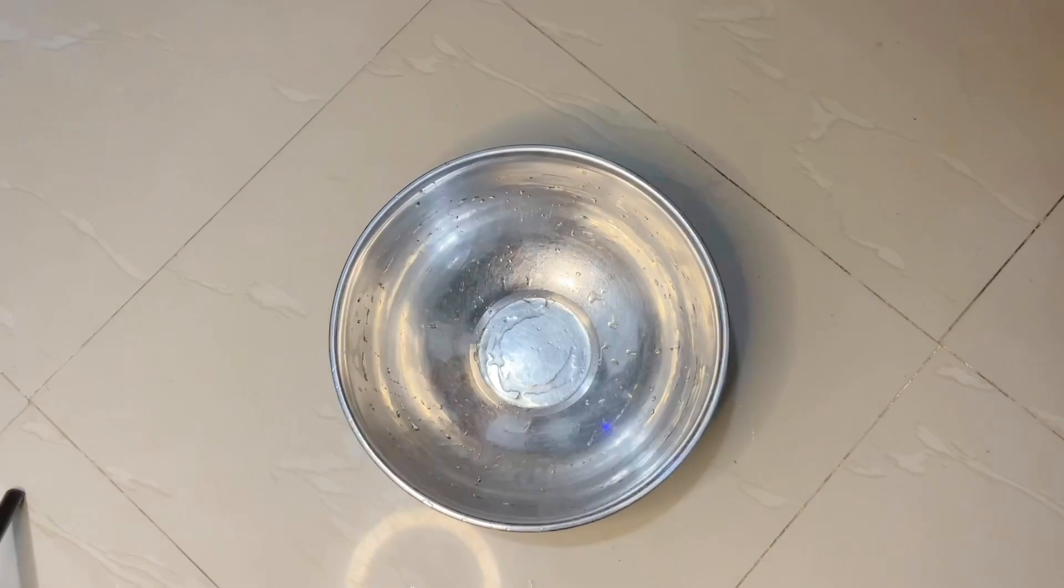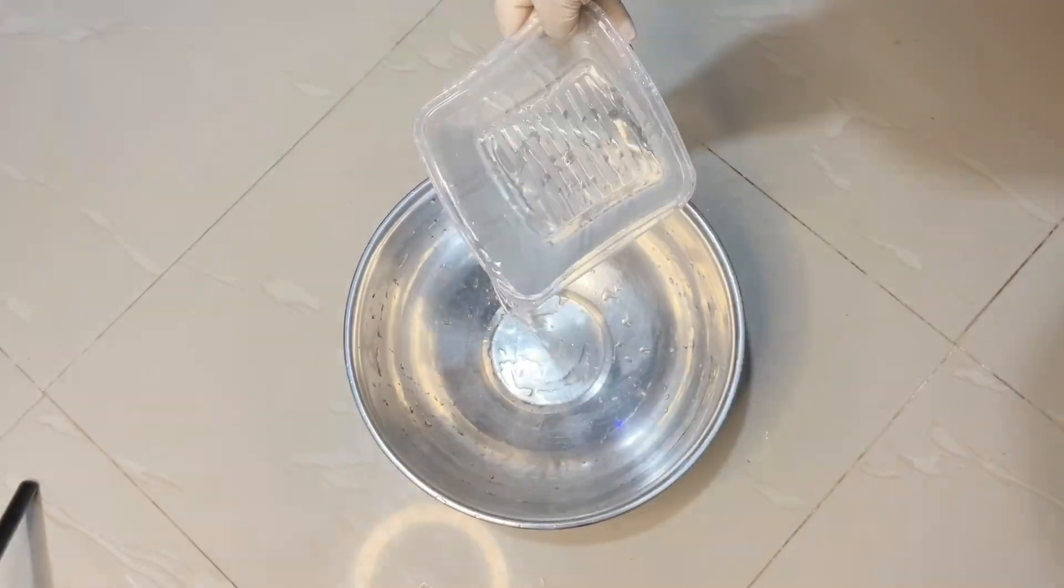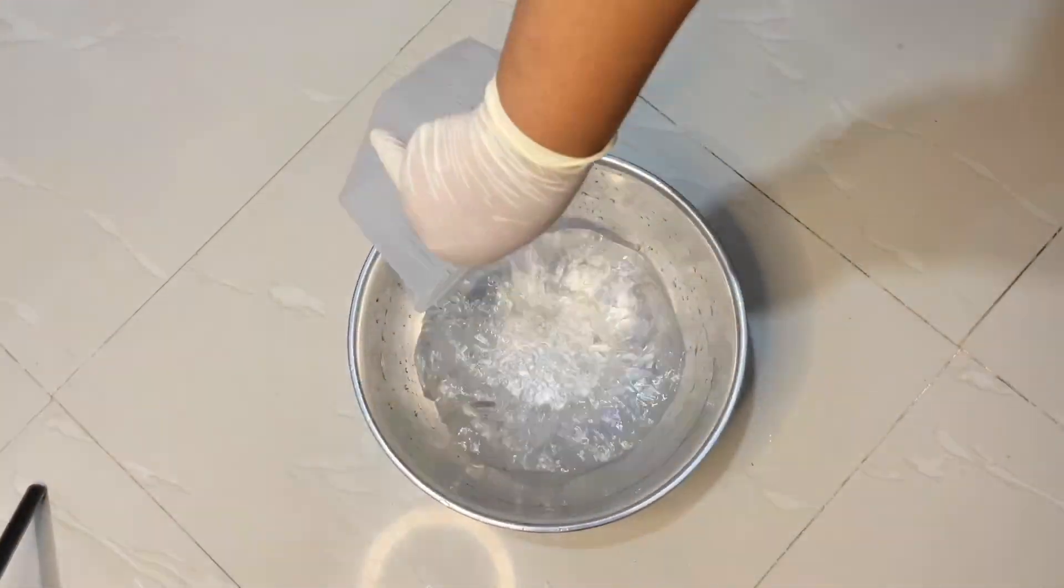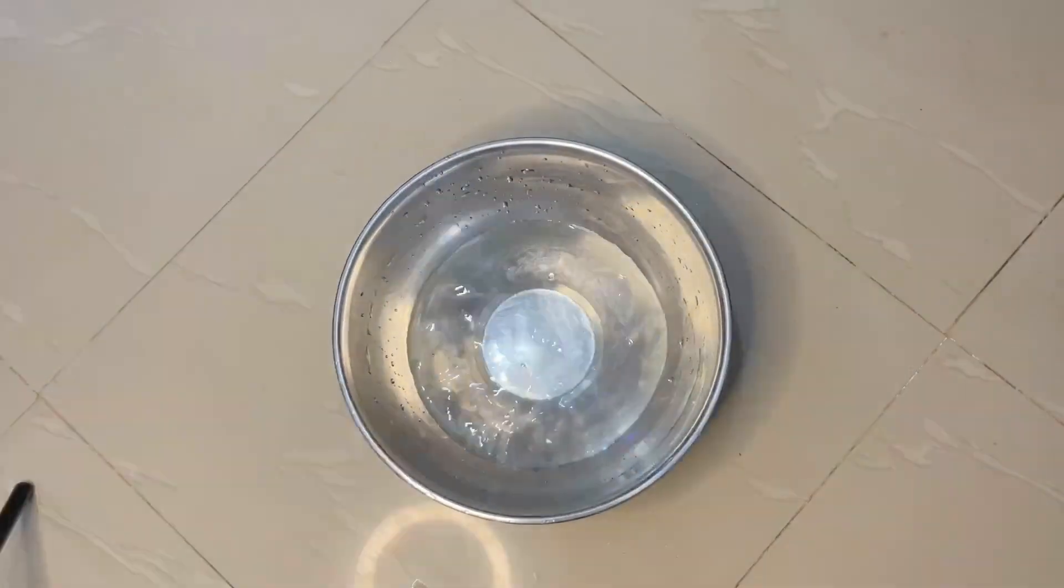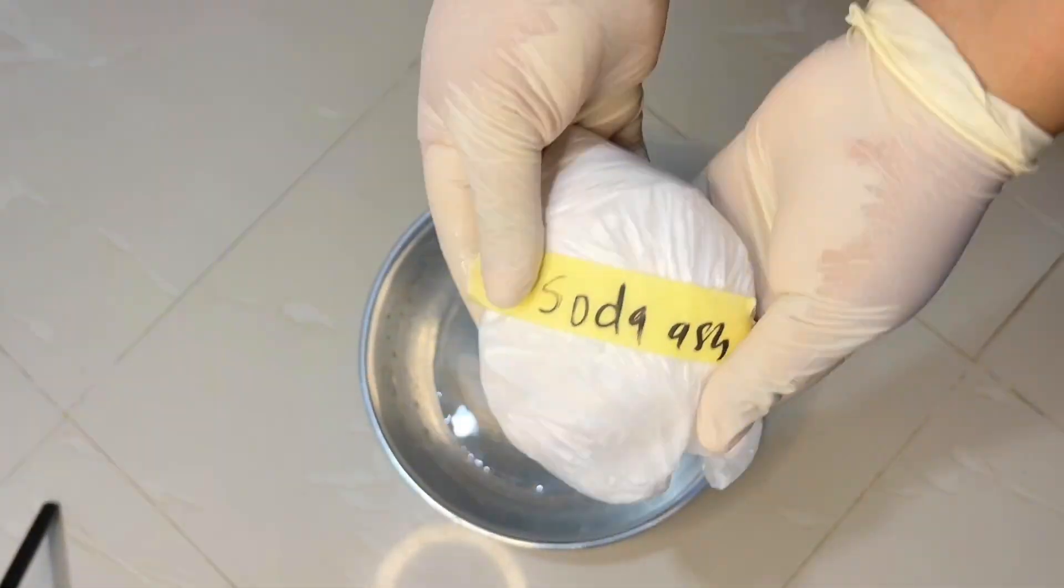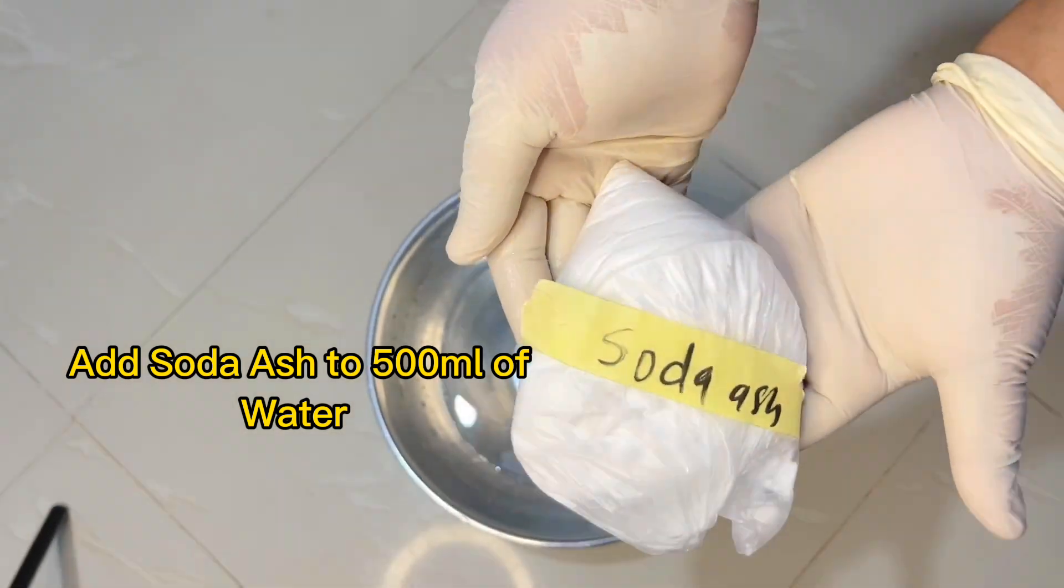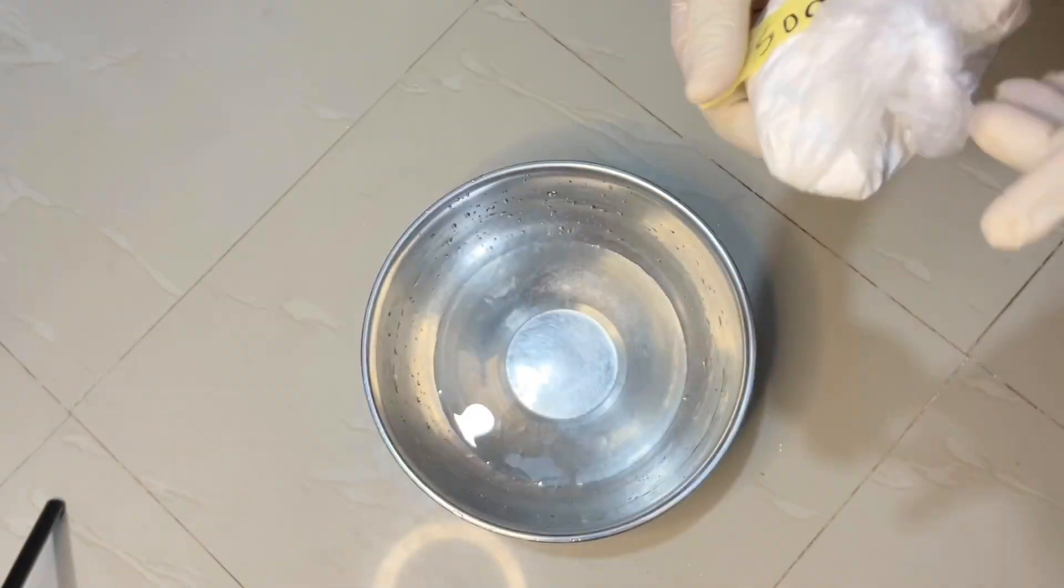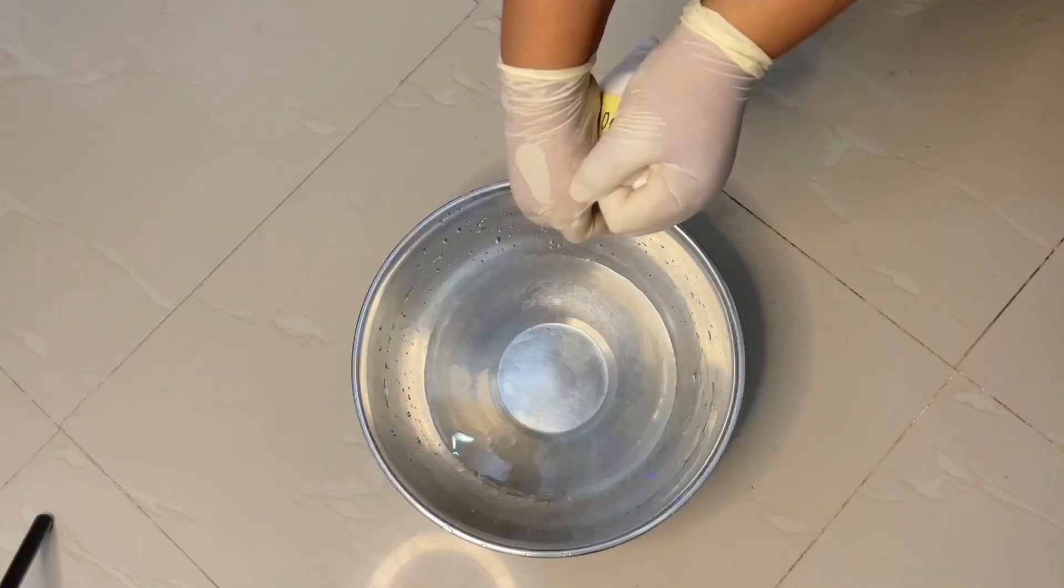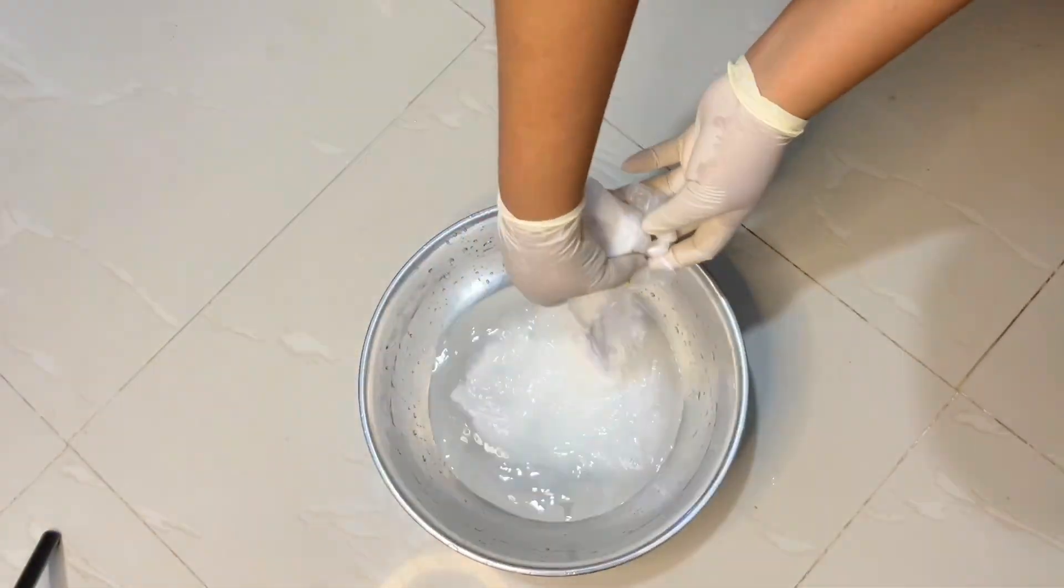So we'll be setting this aside to introduce our next ingredient. So in this bowl we'll be adding 500 ml of water, yes, 500 ml of water. Then we'll be introducing our next ingredient, which is soda ash. So turning our soda ash into the water—we already know what soda ash does. It helps remove stains as well and it softens the water. So we're adding the soda ash into the water.